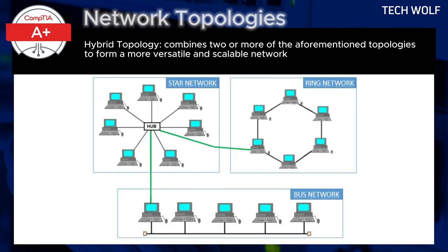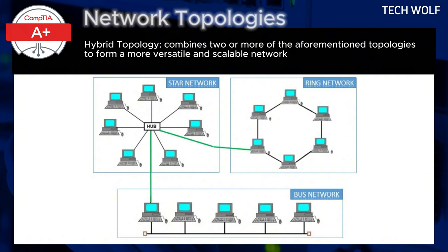Lastly, we have hybrid topology, which combines two or more of the earlier mentioned topologies to form a more versatile and scalable network. This approach allows the network to adapt to specific needs and constraints by integrating different topologies in different sections. For example, a company might use star topology within each department and mesh topology to connect the departments together.